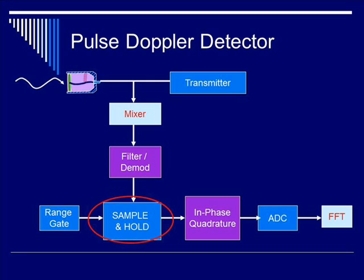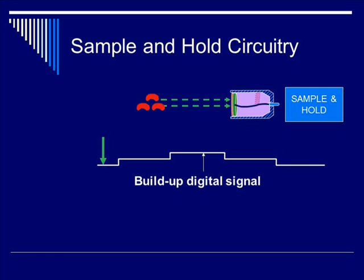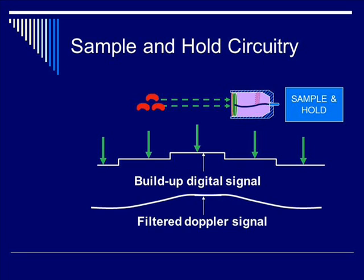Let's talk about the sample-and-hold. As the name suggests, you're sampling the analog signal and building up the signal inside a hold circuit. As blood cells reflect velocities back to the transducer and into the detection system, you gradually build up the digital signal, as indicated by the green arrows. As signals are built up during each sampling period, they are digitized and converted via smoothing into a filtered Doppler signal.